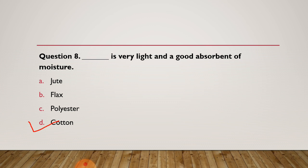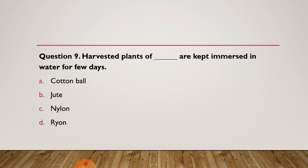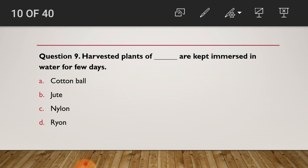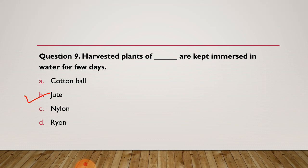Now moving to question 9: Harvested plants of dash are kept immersed in water for a few days. Options: cotton balls, jute, nylon, or rayon. Have you chosen your right answer? The right answer of question 9 is jute. Harvested plants of jute are kept immersed in water for a few days.